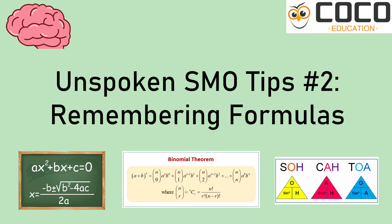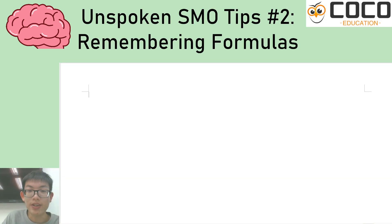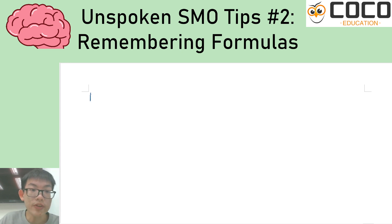Hello everyone. Today we're going to be dealing with a very annoying problem when preparing for any Olympiad or even for math in general, which is how do I remember so many formulas? In the thumbnail, you see that I've included the quadratic formula, the binomial theorem, as well as your trig ratios as some examples. We're going to talk about how we can more efficiently remember all these formulas, identities, definitions, or whatever they may be. The theme for today is basically efficient memorization.